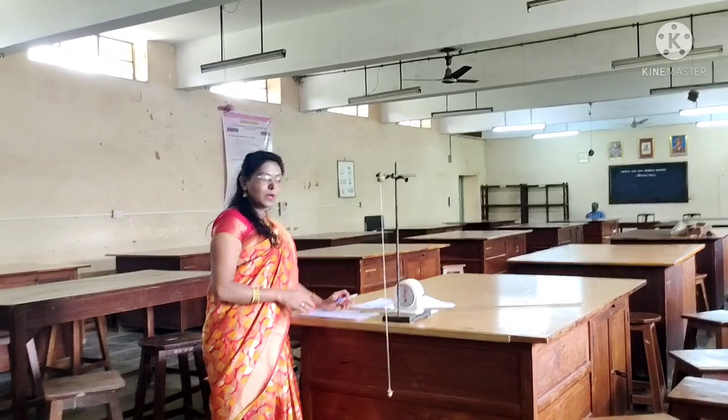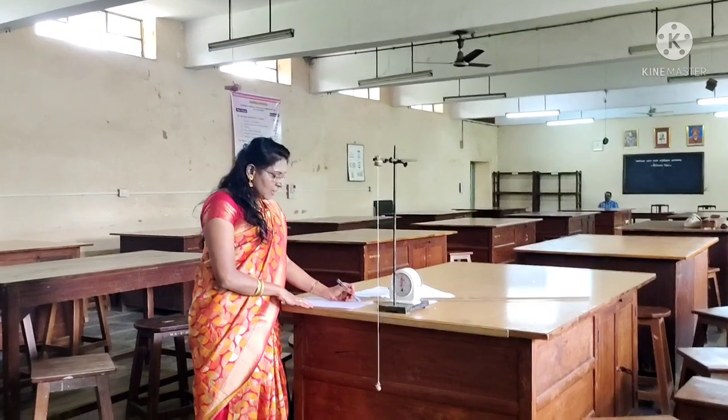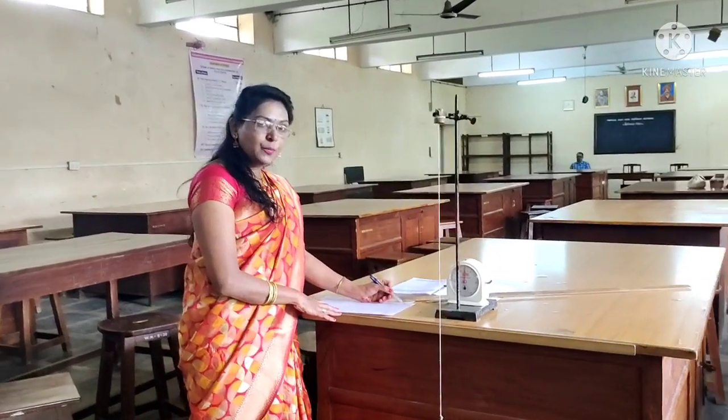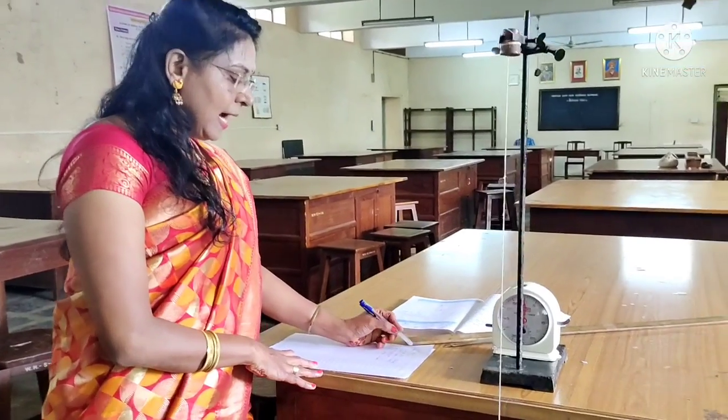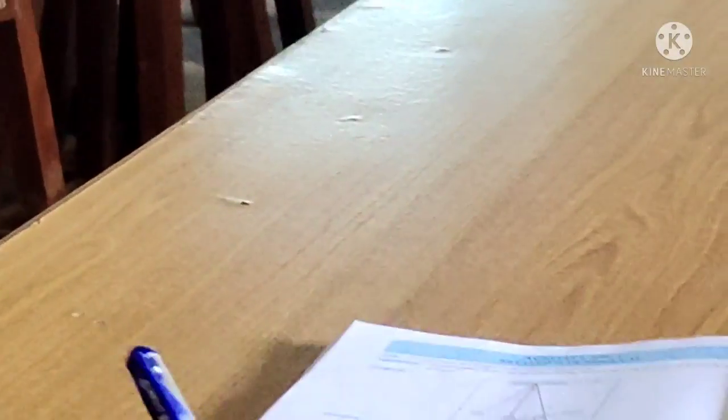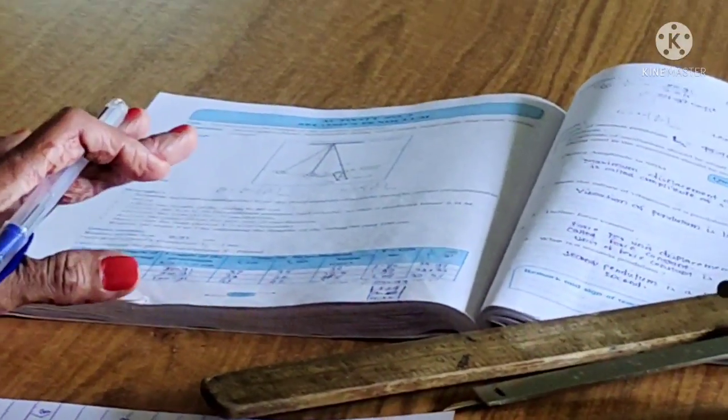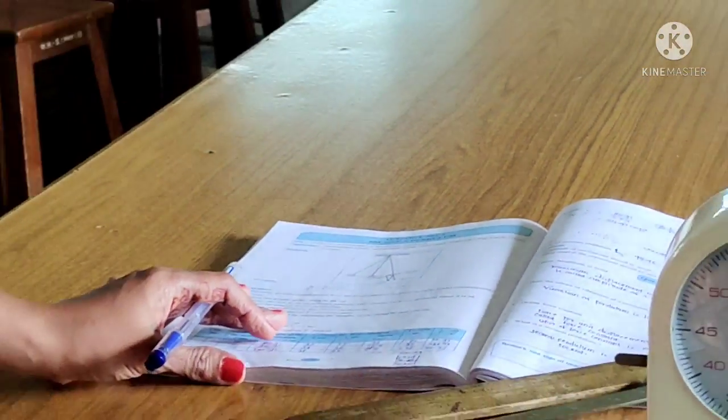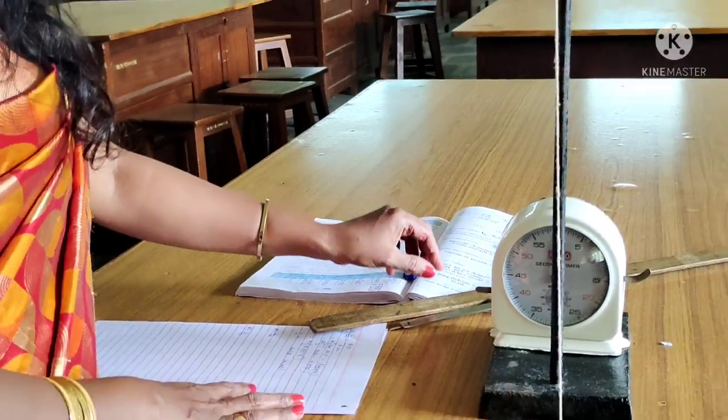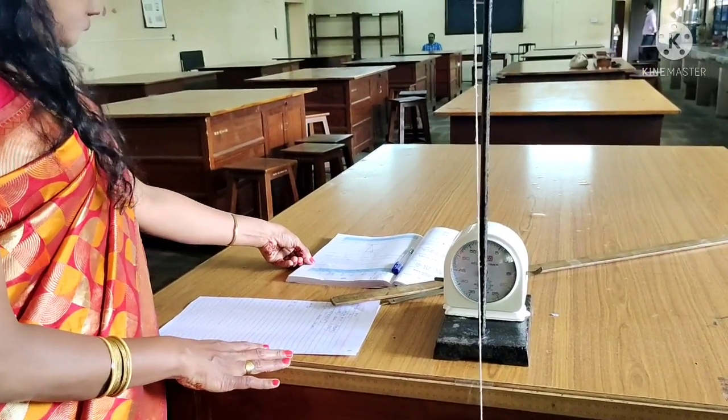The formula we have used for this activity is L by T square. First of all we have to determine and finally mean of that L by T square is multiplied by 4π², and from this we can determine the length of second pendulum.